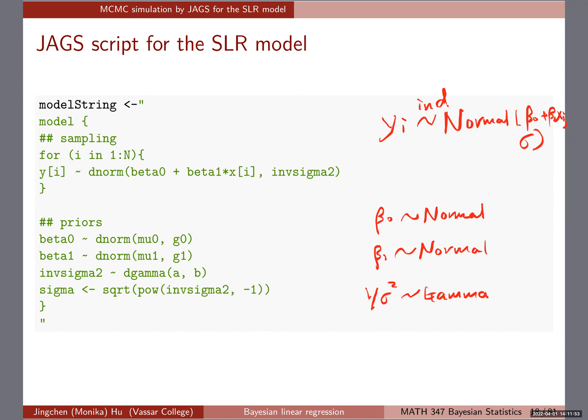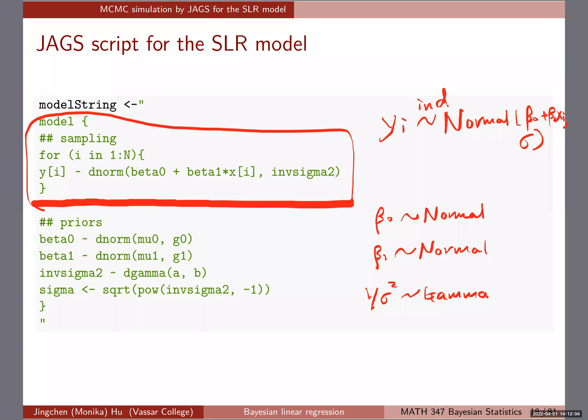We should have a model sampling block and a priors block. For the sampling block, yi independently follows a Normal with mean beta0 + beta1*xi and standard deviation sigma. Because this covers n observations, we write a for loop where each yi follows a Normal. In JAX, when writing that a random variable follows a normal distribution, I use dnorm and plug in the mean, which is beta0 + beta1*xi, where xi will be passed in later.